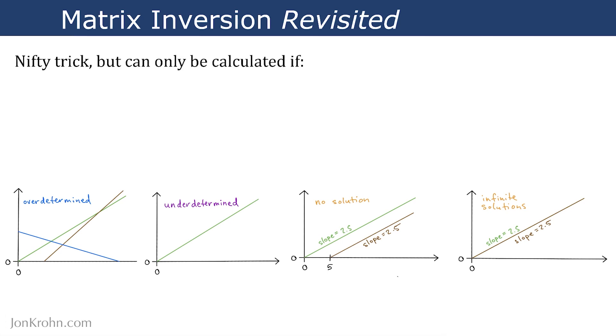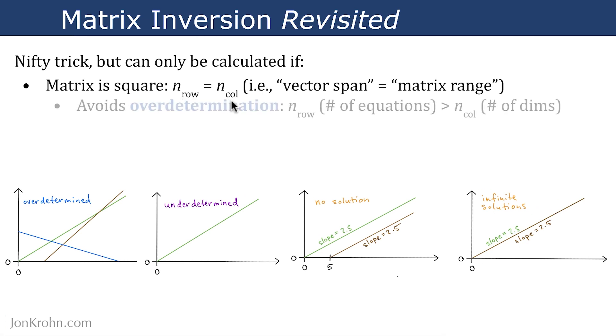Matrix inversion is definitely a nifty trick, but it can only be calculated if a matrix is square—that is, the number of rows equals the number of columns in the matrix. This avoids overdetermination, which is a situation where we have far more rows, or at least one more row, than we have columns. This is an example of an overdetermined situation where we have three equations for a line and only two dimensions, so three rows and two columns in our matrix.